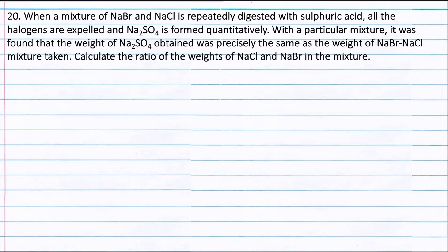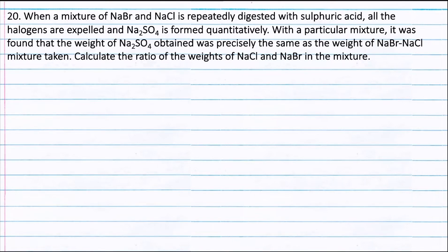Question 20. When a mixture of NaBr and NaCl is repeatedly digested with Sulfuric Acid, all the Halogens are expelled and Na₂SO₄ is formed quantitatively. With a particular mixture, it was found that the weight of Na₂SO₄ obtained was precisely the same as the weight of the NaBr and NaCl mixture taken. Calculate the ratio of the weights of NaCl and NaBr in the mixture.